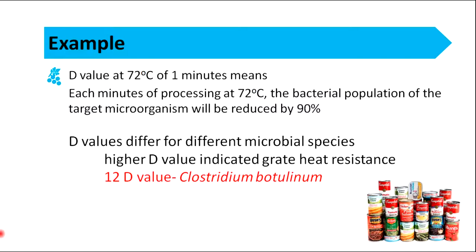When talking about D-value, 12-D treatment is an important concept. 12-D treatment refers to the application of sufficient heat to kill 10 to the power of 12 spores of Clostridium botulinum. Clostridium botulinum is a very dangerous moist heat-resistant, spore-forming pathogen in low-acid foods. It is anaerobic and may survive in hermetically sealed cans.